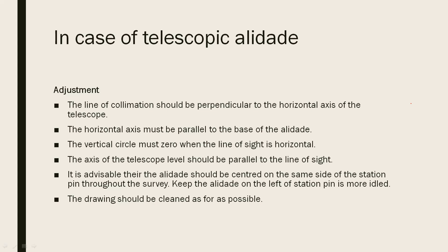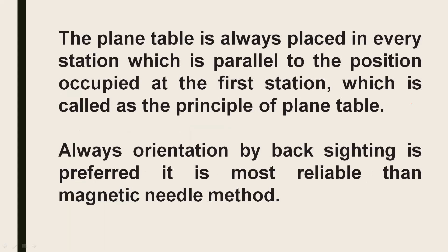The drawing should be clean. The line of collimation is the line of sight. The horizontal axis of the alidade should be perpendicular to the vertical axis and parallel to the base of the alidade. The plane table is always placed at every station parallel to the position occupied at the first station — this is called the principle of plane table surveying. Always, orientation by back-sighting is preferred, as it is more reliable than the magnetic needle method.